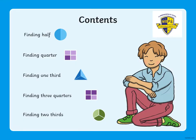On this slide we have something we had done earlier. The first circle shows finding half — you can see that half of the circle is shaded. The square shows finding quarter — one part is shaded out of four. The triangle shows finding one-third — one part is shaded out of three. Next, finding three-quarters — three parts shaded out of four. And the last circle shows finding two-thirds — two parts shaded out of three. This was studied in the previous lesson.